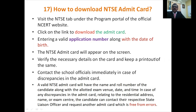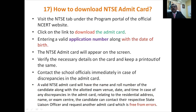Suppose in the admit card you find any errors — about your name initials, spelling, or anything else — and you need corrections, you can contact your school officials. There is a procedure to rectify the problem. They will guide you on how to make the corrections, and you can then get a proper admit card free from errors.